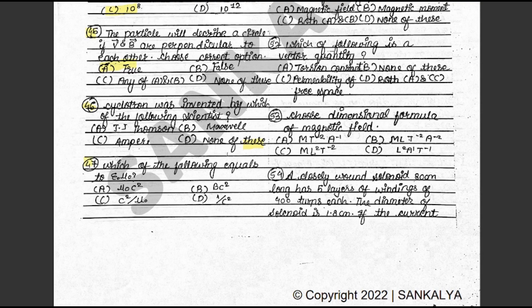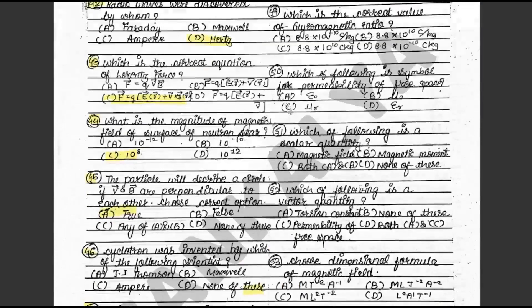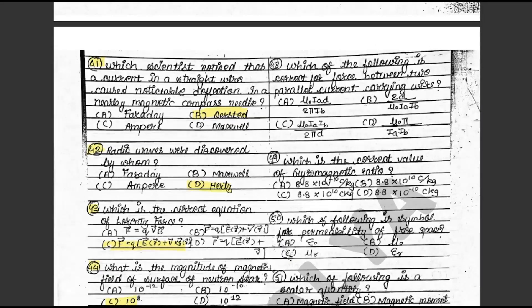Question 47: Which of the following equals to ε₀μ₀? The answer is D: 1 upon C square. This is on textbook page 144. Question 48: Which of the following is correct for force between two parallel current-carrying wires? The answer is C: μ₀IaIb upon 2πd. This is on textbook page 155.